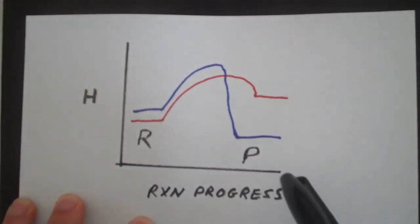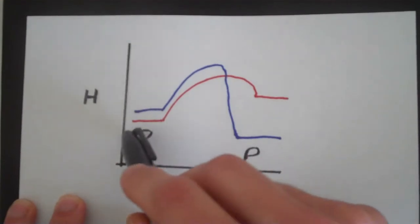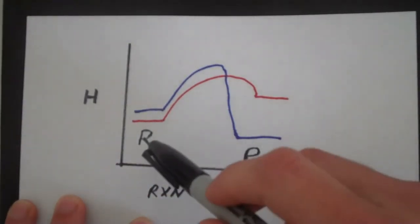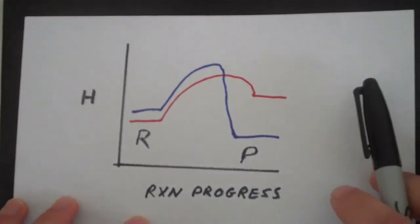The red curve here corresponds to an endothermic process while the blue curve corresponds to an exothermic process. The R stands for reactants and the P stands for products.